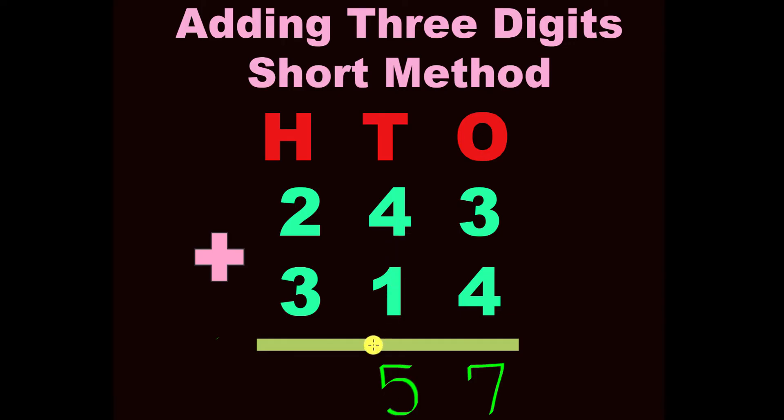Now we will travel to the hundreds place, and we will add the hundreds place straight down, or vertical. Two plus three equals what? Of course, very easy, five.